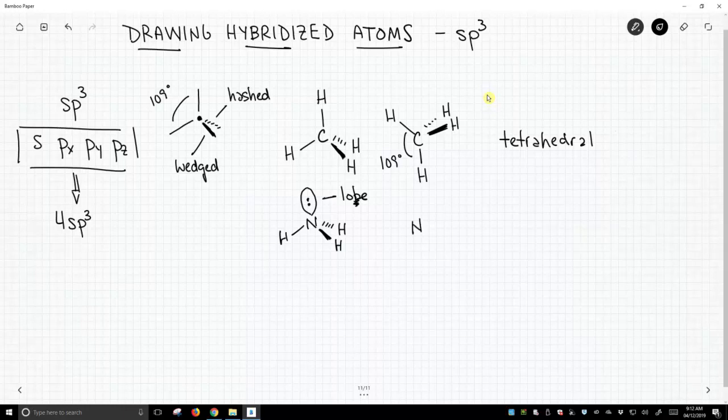We could draw this differently. We could put the lone pair coming out of the plane of the writing surface instead, and I'll try to draw that a little darker as if it's wedged. That would be fine. These are both ammonia. They have a trigonal pyramidal geometry.